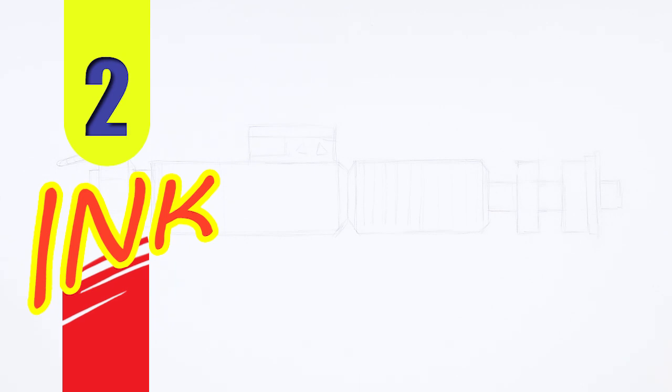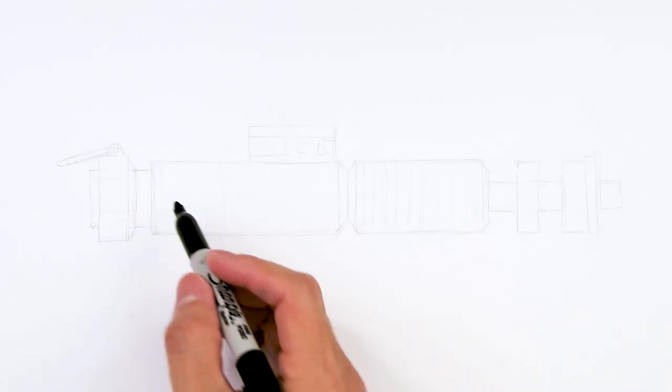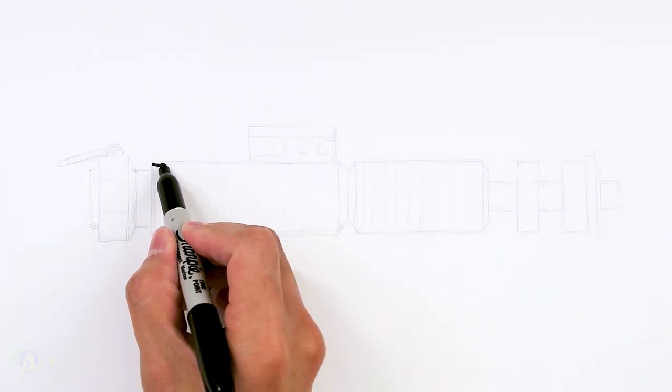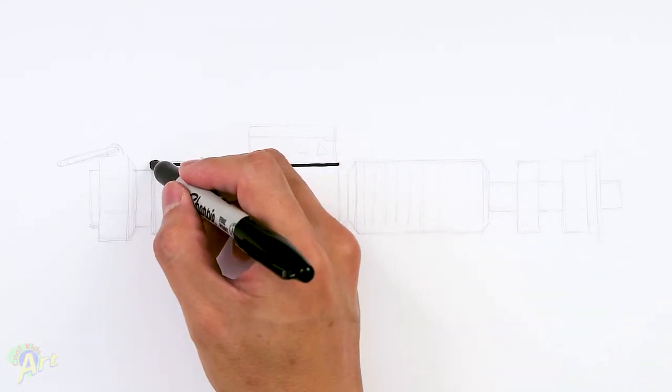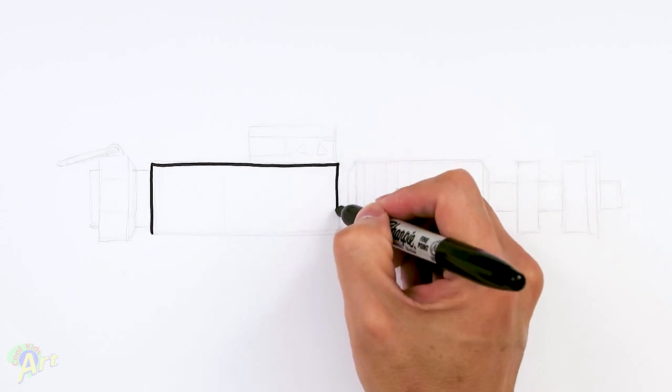All right, so let's draw this and I'm gonna begin with the lower part of the handle first. So it's just gonna be one long rectangle. So this is gonna be about half the length of the lightsaber.